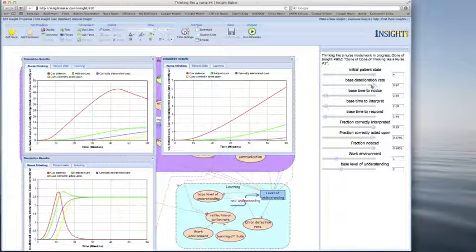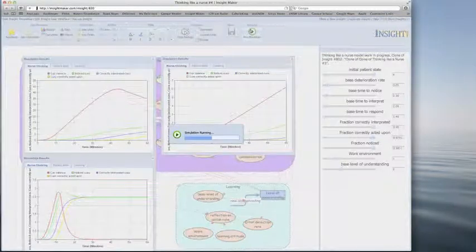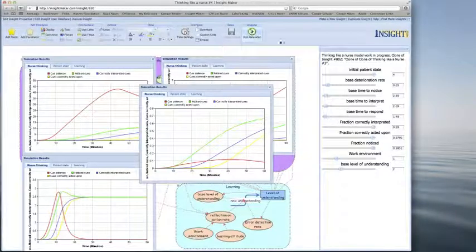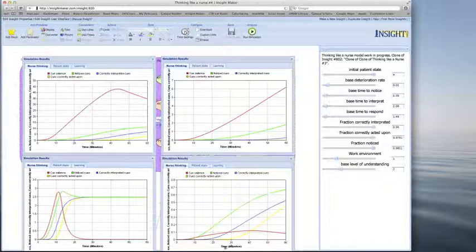Let's have a look at that scenario again, and this time with a lesser deterioration rate. So here's the same scenario that's well handled, but in this case the patient is deteriorating at a much slower rate. So you can see the cues build quite slowly, which is this red line here, and really barely built before they start to be noticed, correctly interpreted and acted upon. So the cues really never get to build with the patient deteriorating at such a slow rate.